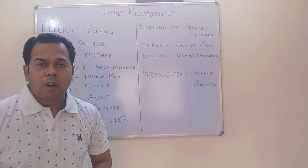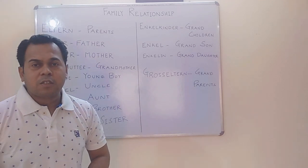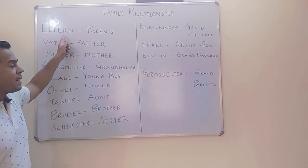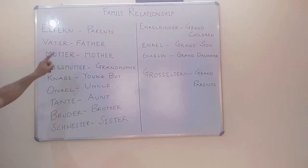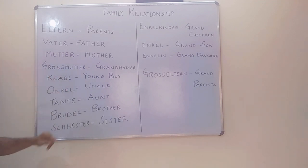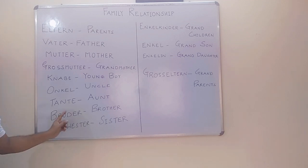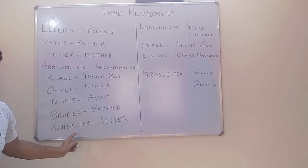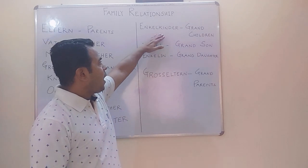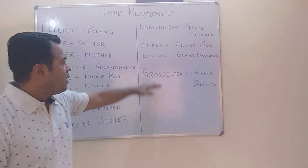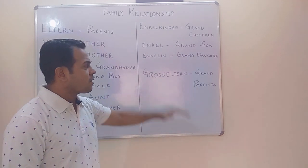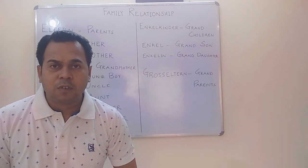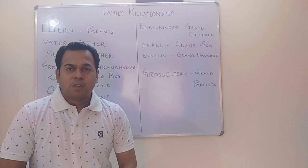Let's revise once more: Enkelkinder means grandchildren, Enkel means grandson, Enkelin means granddaughter, Großeltern means grandparents. Now I will pronounce only the German words — you have to repeat after me: Eltern, Vater, Mutter, Großmutter, Knabe, Onkel, Tante, Bruder, Schwester. Then the right section: Enkelkinder, Enkel, Enkelin, Großeltern.